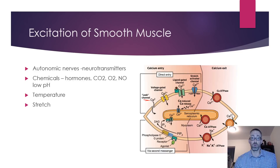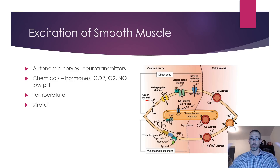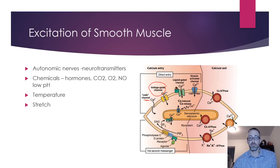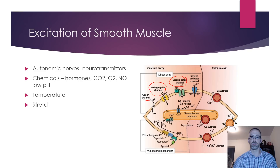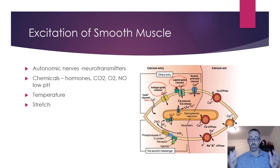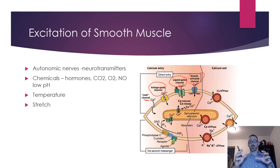Looking at the diagram of calcium entry mechanisms: a leak channel allows calcium to gradually enter — as in pacemaker cells — and ultimately depolarize the cell. Voltage-gated calcium channels can be triggered by neurotransmitter responses. A ligand-gated channel, such as norepinephrine binding to a receptor, opens a calcium channel and can also trigger voltage-gated channel changes. Stretch-activated channels open when mechanical distortion of the membrane allows calcium in.